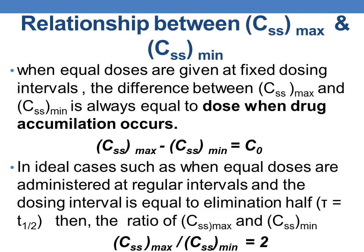When equal doses are given at fixed dosing intervals — whenever dose size and dosing frequency are held constant — and drug accumulation occurs, the difference between CSS max and CSS minimum will always be equal to the dose. CSS max will be two times the dose and CSS minimum will be the dose, so CSS max minus CSS minimum equals the dose of the drug.